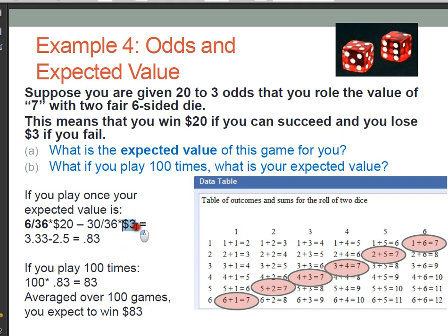When I multiply my probability of winning, which you can just do this as a decimal, times how much I'm going to win, I get $3.33. When I multiply my probability of losing times how much I'm going to lose, I get $2.5. And when I do this subtraction, I get $0.83. So basically, my expected value here is a positive number, and it's $0.83.